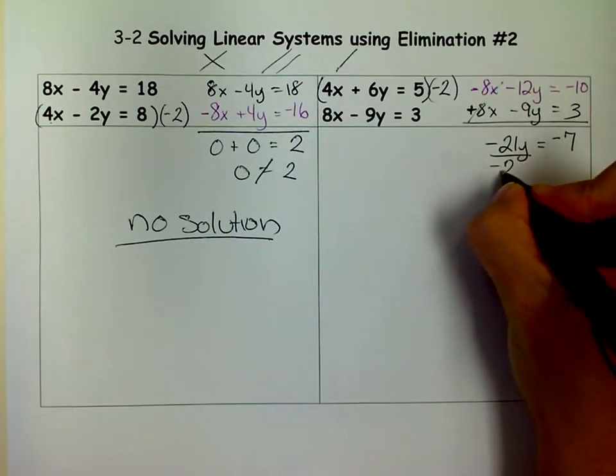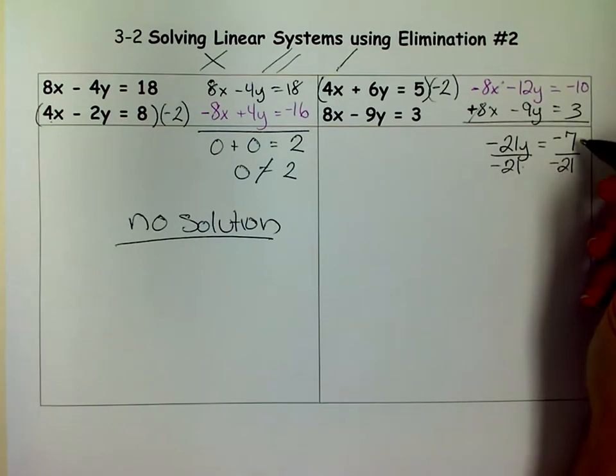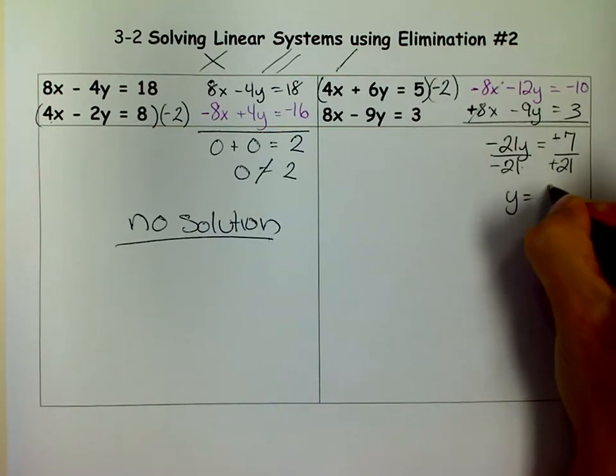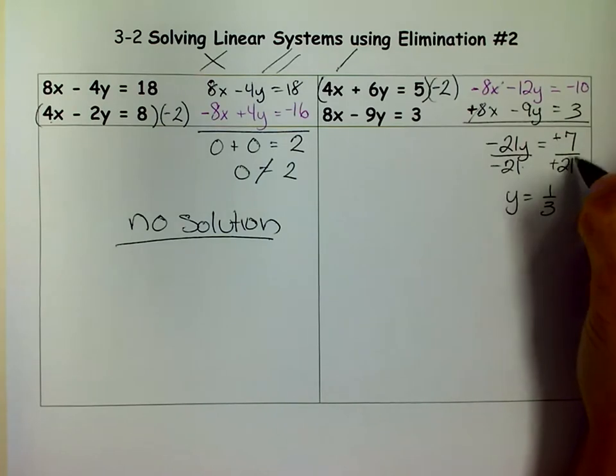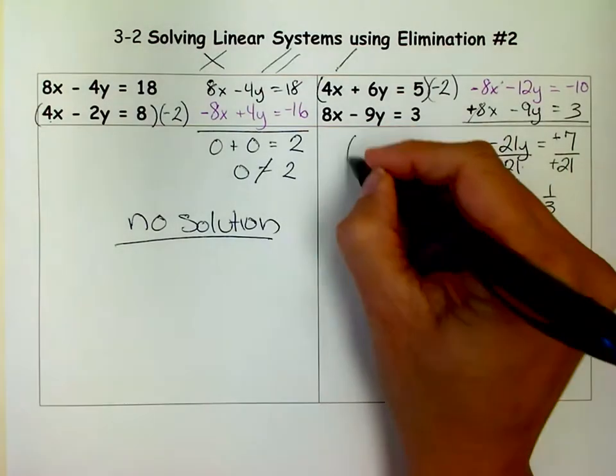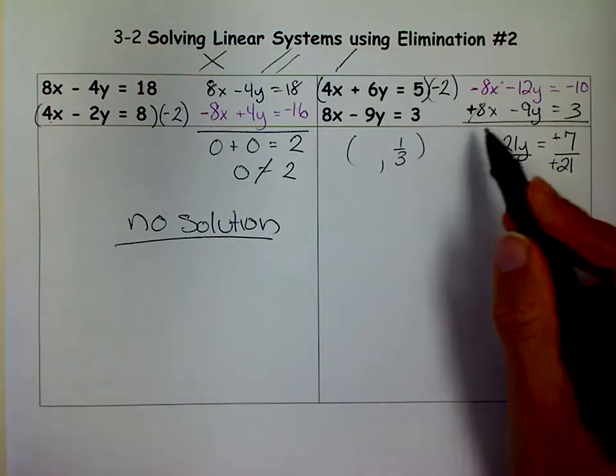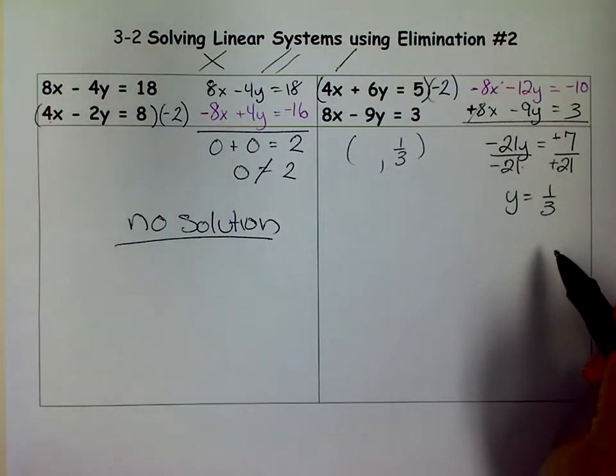When I divide both sides by negative 21, you remember 7 divided by 21 is not 3. The other way is 3. So the negatives cancel out and my answer is actually 1 third. A lot of people make that mistake. They say, oh, that's 3 because I don't like fractions. But this is actually 1 third. 7 divided by 21 is 1 third. So there's my y. And sometimes you get fractions. You can double check and make sure you didn't make mistakes, but it's okay to get fractions.